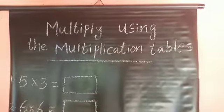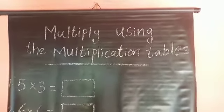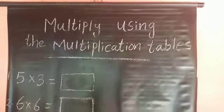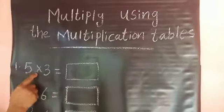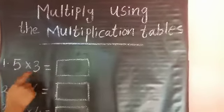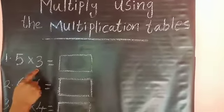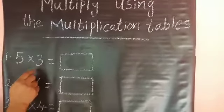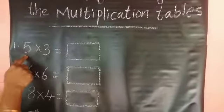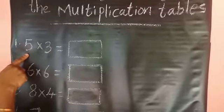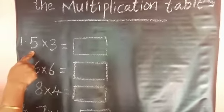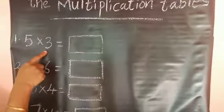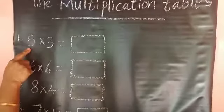Okay children, next we are going to learn to multiply using the multiplication tables. Just recall the multiplication tables. First question: 5 into 3. Recall the multiplication table of 3: 1 into 3 is equal to 3, 2 into 3 is equal to 6, 3 into 3 is equal to 9, 4 into 3 is equal to 12, 5 into 3 is equal to 15.